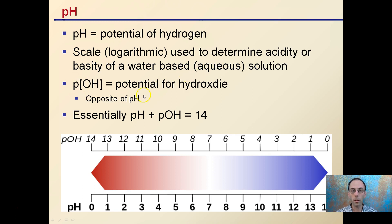There's also something called pOH, and that's the potential of hydroxide. While we typically focus on pH, hydroxide is the opposite. If we take pH 2, the pOH of that would be 12. If we add them together, we get 14, which is our scale.